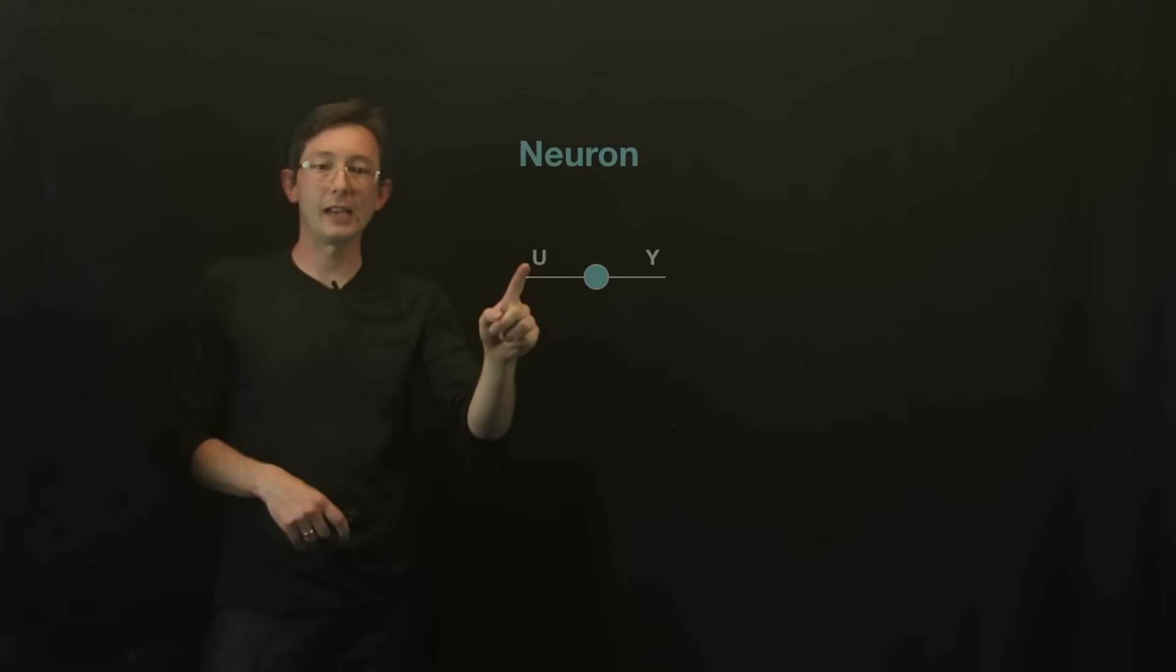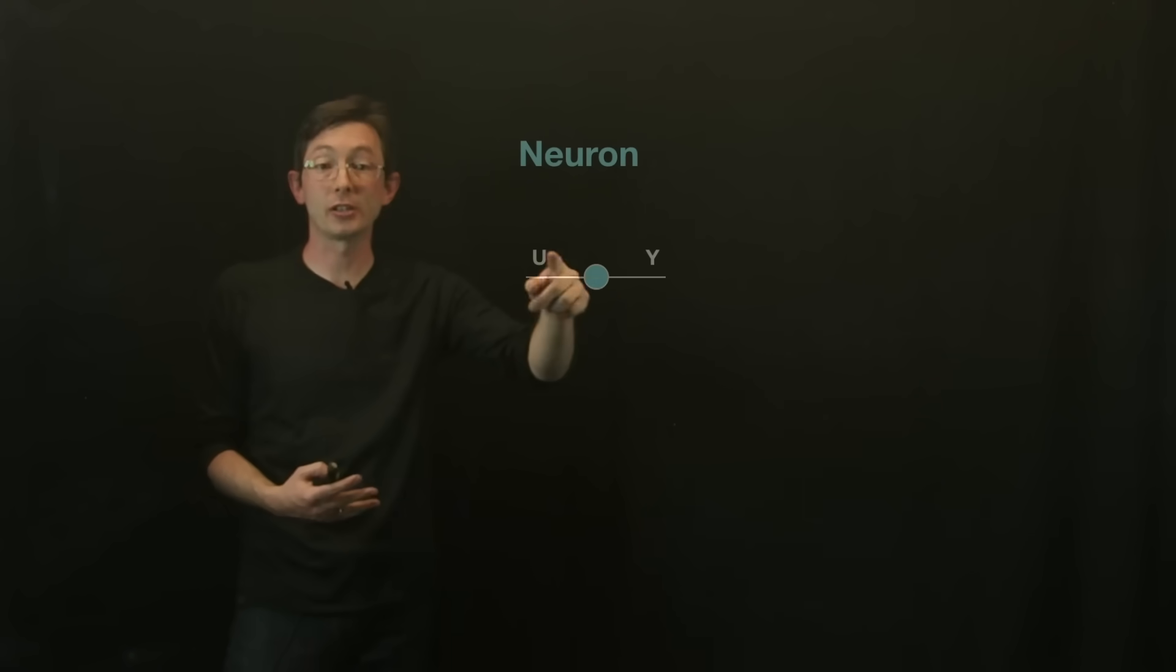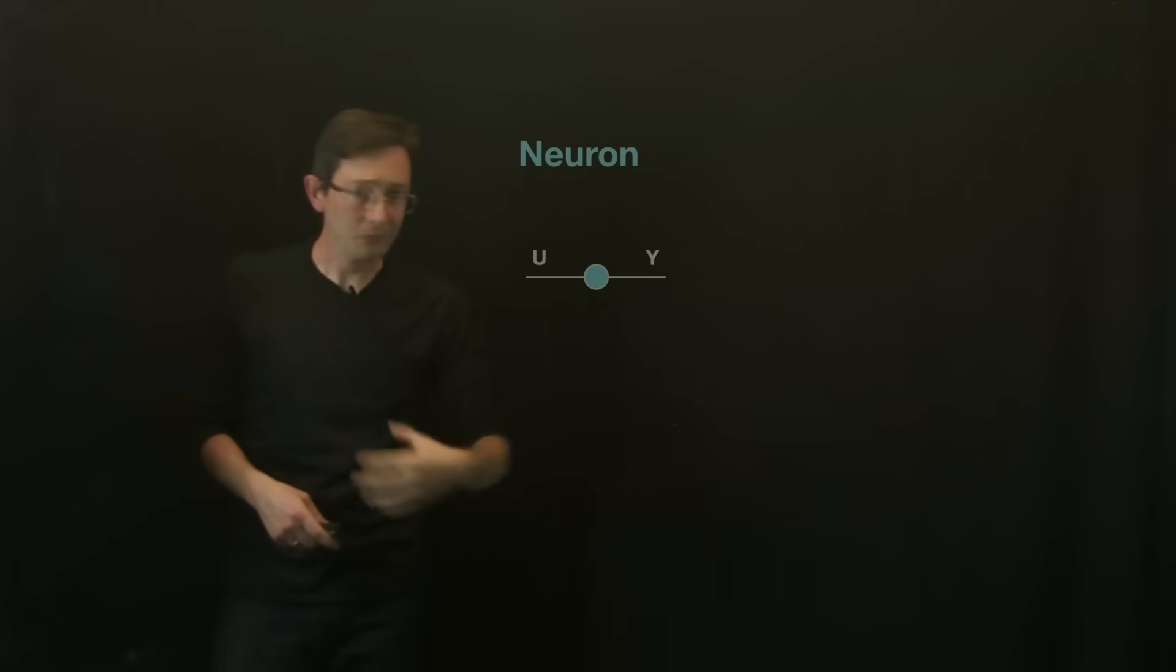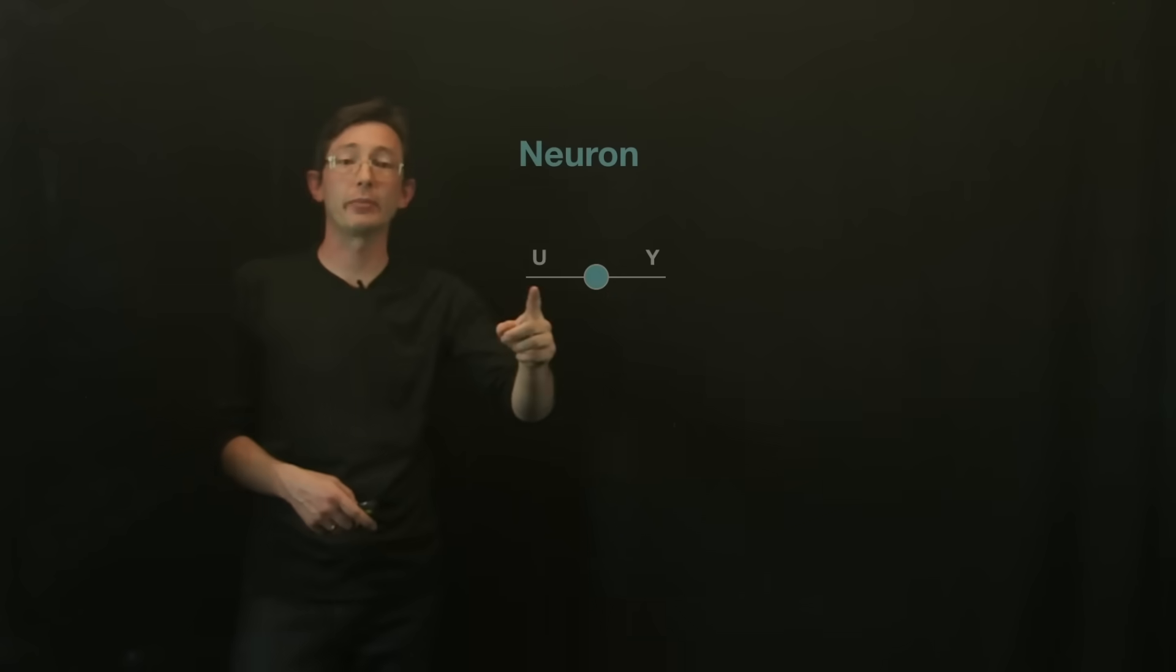To be mathematically precise, you have an input signal U that goes into this node, and it does some mathematical operation on U to give you some output Y. This could be something like just multiplying it by a constant or adding a constant, or it can be more sophisticated.